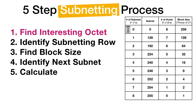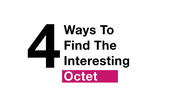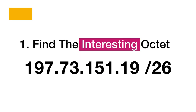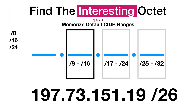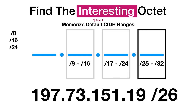There are four ways to find the interesting octet. If you're presented with the IP address and the CIDR, you need to figure out which octet to focus your energies on. One way is to memorize the default CIDR ranges: if it's 9 to 16, focus on the second octet; if it's 17 to 24, focus on the third; and if it's between 25 and 32, focus on the fourth. With a /26, that fourth octet is where you focus. That's one way — just memorize these CIDR ranges.